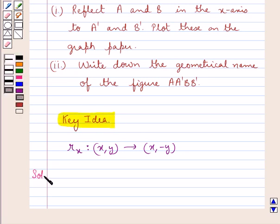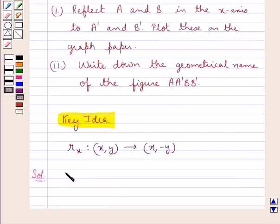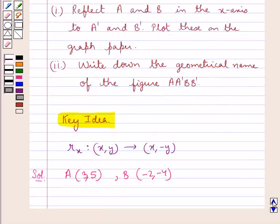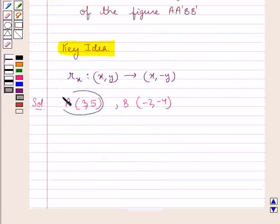Let's proceed with the solution now. First of all, we are given the points A and B. We have point A with coordinates (3, 5) and point B with coordinates (-2, -4). First we need to plot these points on the graph paper. Point A has x-coordinate 3 and y-coordinate 5.